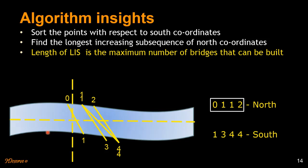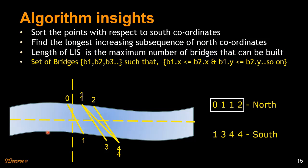From these examples we understand we want to find a set of bridges b1, b2, b3 such that the northern coordinate of b1 is less than or equal to the northern coordinate of b2, and the southern coordinate of b1 is less than or equal to the southern coordinate of b2. We use sorting to ensure the southern coordinates are ordered, and we use the longest increasing subsequence algorithm to ensure the northern coordinates are also ordered.